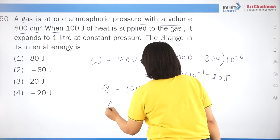Question 50: a gas at 1 atm with volume 800 cc receives 100 J of heat and expands to 1 liter at constant pressure. Work done W = P×ΔV = 10⁵×(1000−800)×10⁻⁶ = 10⁵×200×10⁻⁶ = 20 J. Change in internal energy ΔU = Q − W = 100 − 20 = 80 J, which is option 1.